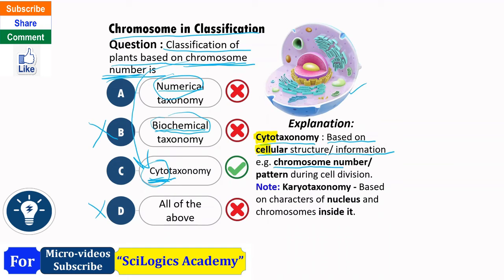Cytotaxonomy is based on chromosome number or pattern during cell division. If classification is based on chromosomes during cell division, it is known as cytotaxonomy. There is another related term: karyotaxonomy. Karyo is related to nucleus, so karyotaxonomy is based on characters of the nucleus and the chromosomes inside it.